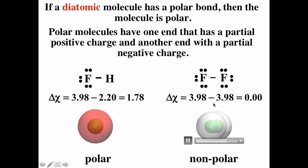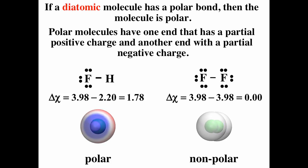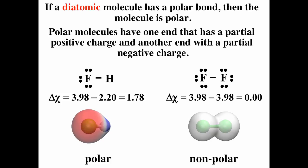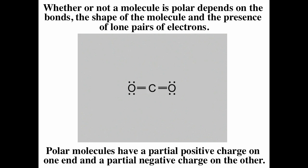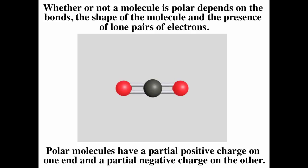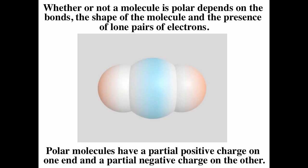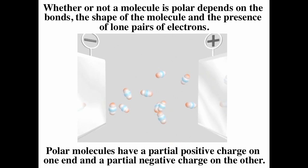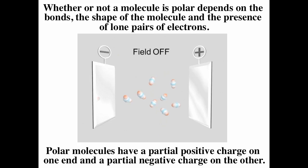If you have more than two atoms, you have to consider the shape of the molecule. Polarity depends on bonds, shapes of molecules, and presence of lone pairs. In carbon dioxide, since oxygen is more electronegative than carbon, each bond is highly polar. But the linear molecular shape makes the bond polarities cancel each other, so CO₂ is nonpolar. Notice that the orientation of CO₂ molecules is random whether the electric field is off or on, confirming it is nonpolar.